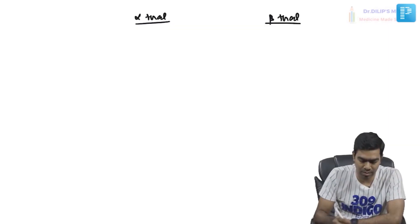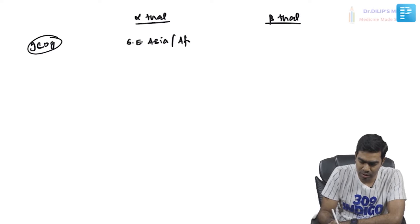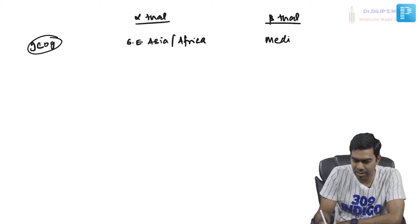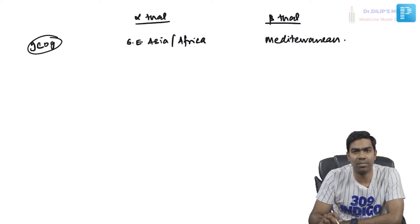What are the basic differences? First, regarding geographical differences: alpha thalassemia is very common in Southeast Asia and Africa, whereas beta thalassemia is also very common in the Mediterranean regions. That is the reason why beta thalassemias are also referred to as Mediterranean anemia.